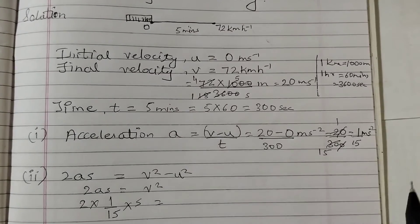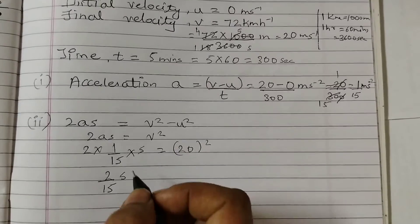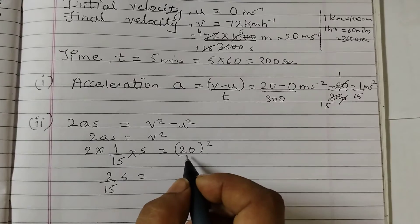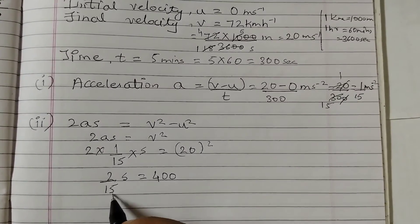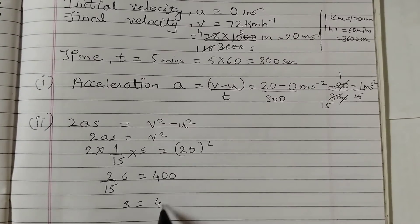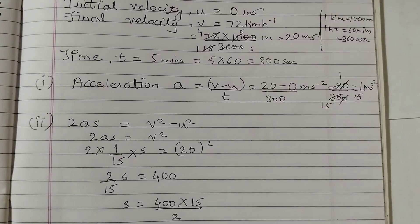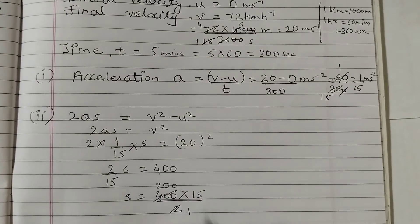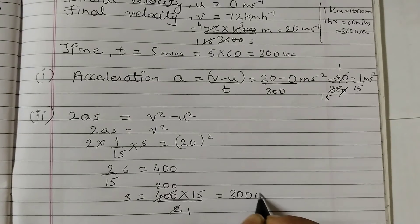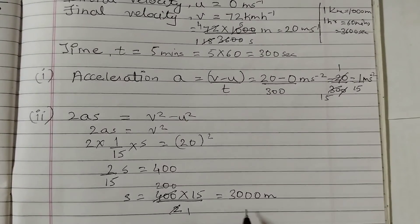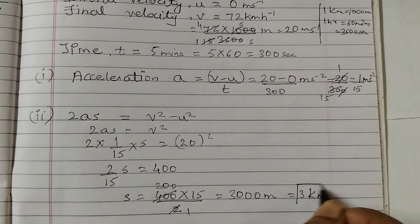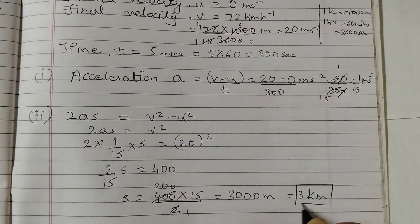Now substitute the values. Acceleration from the previous part is 1 over 15, so 2 times 1/15 times s equals 20 squared. That gives us 2 over 15 times s equals 400. Cross multiplying: s equals 400 times 15 divided by 2, which equals 3000 meters. We can convert this to kilometers by dividing by 1000, so that's 3 km.